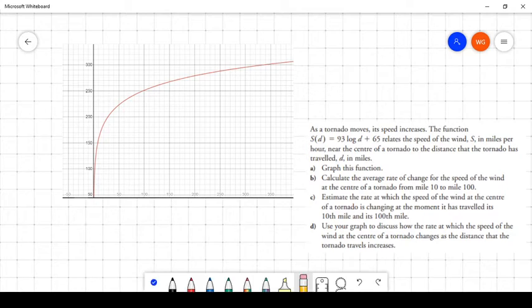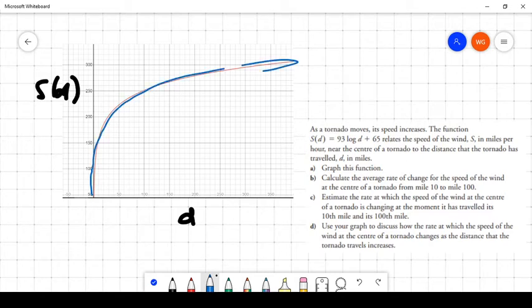what we're saying is the D is along the horizontal axis, and S(D), the speed as a function of distance, is along the vertical axis. So that is the graph that is produced when you graph this relationship on Desmos. So take a minute to look at that graph, and decide upon what it tells you. That's the speed of the wind in the tornado as a function of the distance that the actual tornado has traveled.